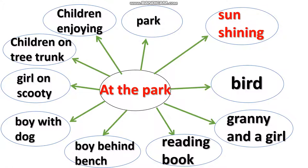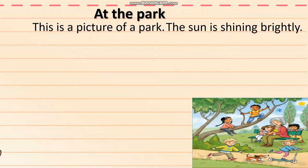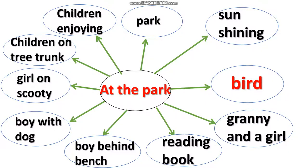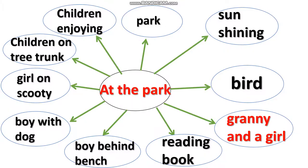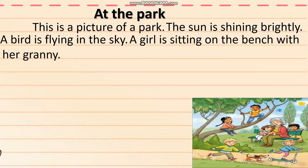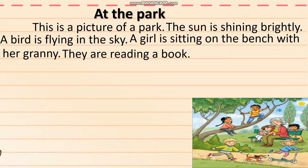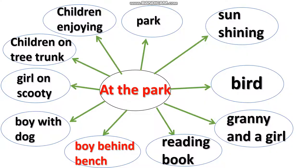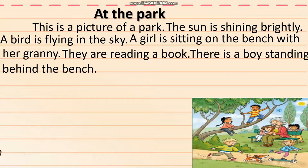This is a picture of a park. Second point is Sun shining — the sun is shining brightly. Bird — a bird is flying in the sky. Granny and a girl — a girl is sitting on the bench with her granny. They are reading a book. Boy behind bench — there is a boy standing behind the bench.